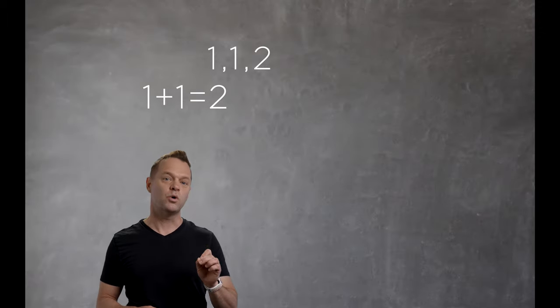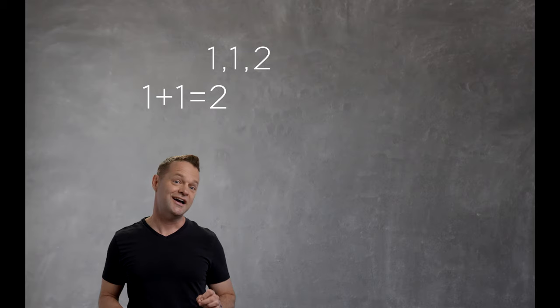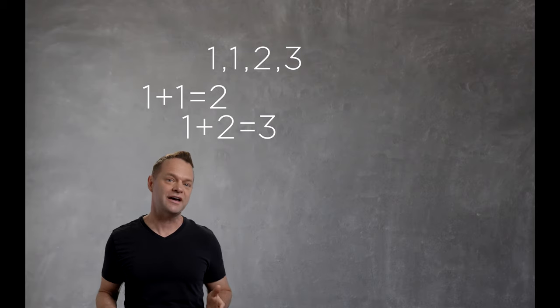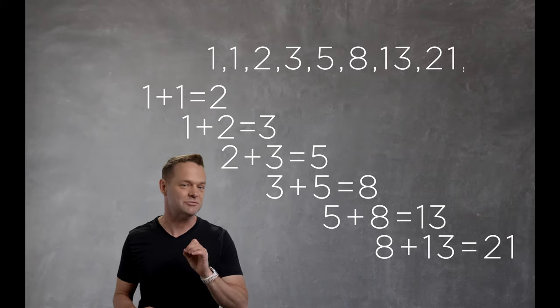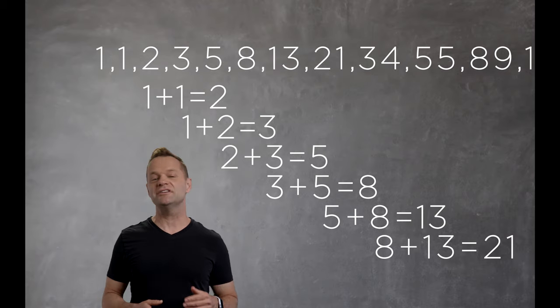Basically the sequence goes like this. You add the first two numbers, 1 plus 1, and you get 2. And then 3 plus 2, you get 5. And then 5 plus 8 gives you 13. And so on. Pretty simple idea. The sequence literally never ends.